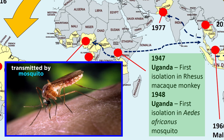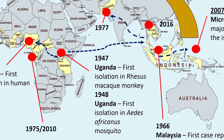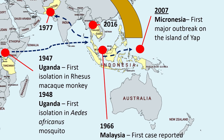We also knew that Zika virus can be transmitted to humans and non-human primates by mosquitoes, and that it typically causes sporadic and mild viral infection. It really wasn't until 2007 or so that Zika virus started causing alarming outbreaks. First, almost three-fourths of the population of Yap, an island in the Federated States of Micronesia, was infected by Zika in 2007.